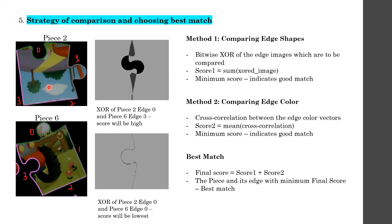There are two methods for comparing and choosing the best match: comparing edge shapes and comparing edge color. For edge shape comparison, I get the edge images and compute a score based on the sum of the bitwise XOR. For example, piece 2 edge 0 versus piece 6 edge 3 produces a high-sum XOR image, while piece 2 edge 0 versus piece 6 edge 0 produces a low-sum XOR image, indicating a good match. The piece with the minimum final score is selected as the best match.